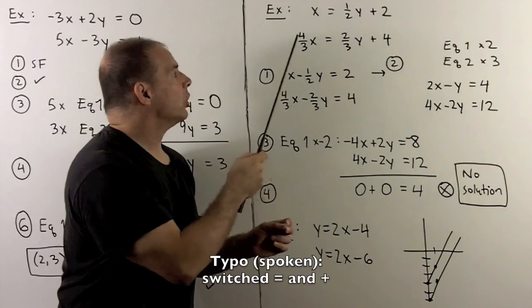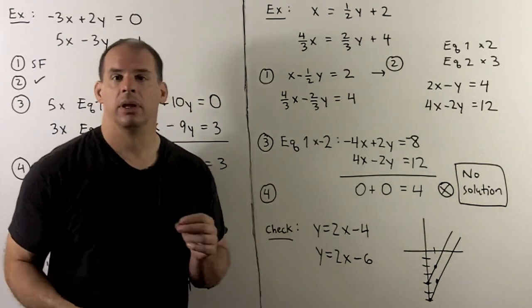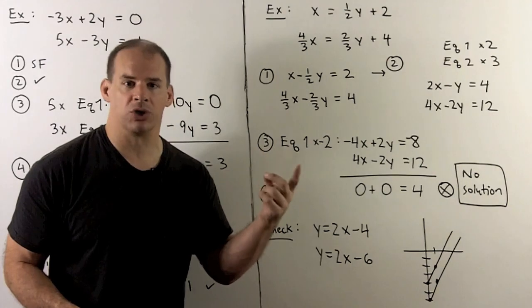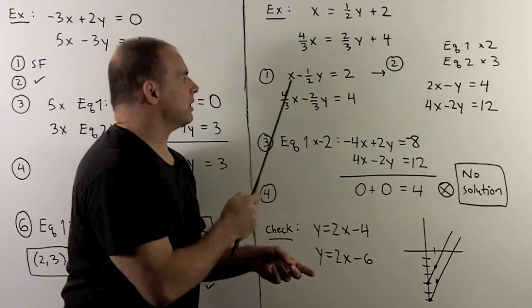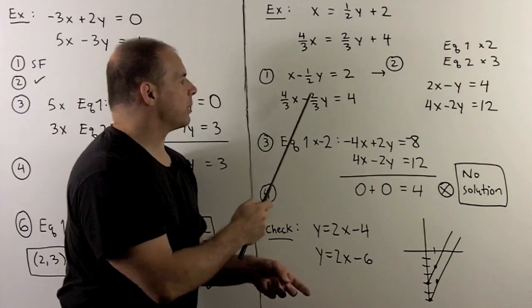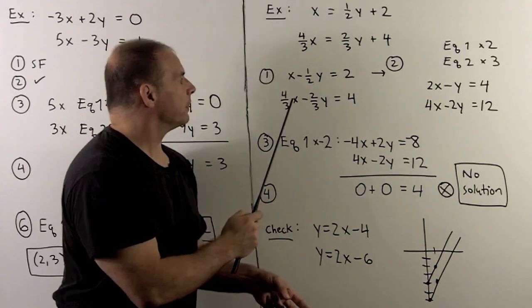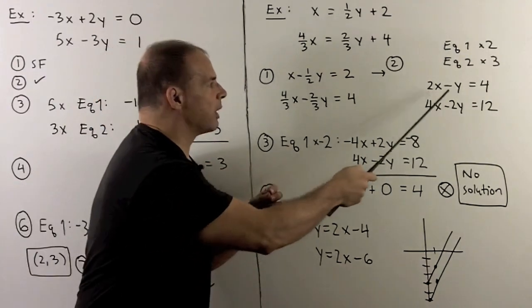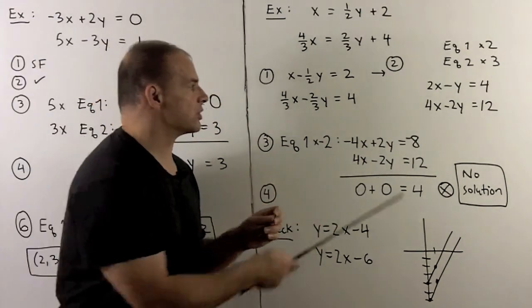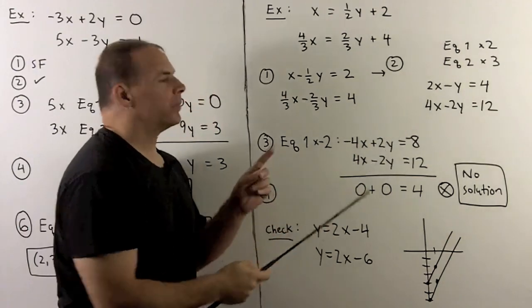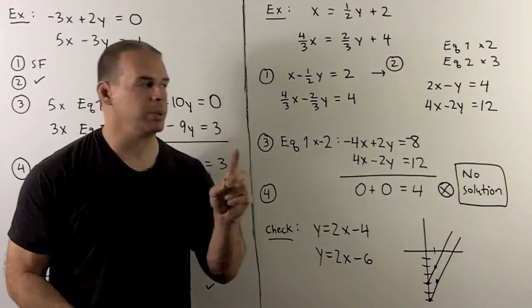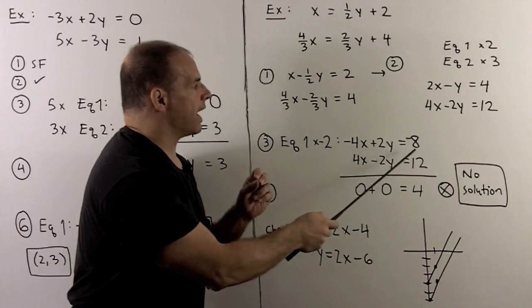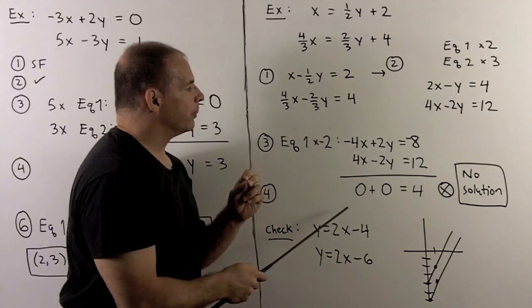Next we'll see a no-solution case. Start with: x equals one-half y plus 2, and four-thirds x plus two-thirds y equals 4. We're not in standard form and we have fractions. First, push the y-term to the other side to get x minus one-half y equals 2. Then clear fractions: multiply equation one by 2 and equation two by 3, giving 2x minus y equals 4 and 4x minus 2y equals 12. Now multiply equation one by minus 2 to get minus 4x plus 2y equals minus 8.